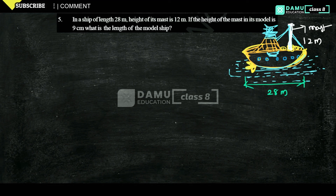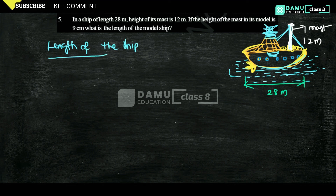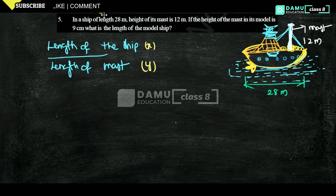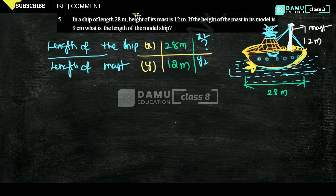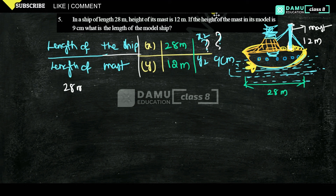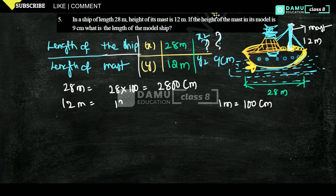We need to find the length of the model ship. Let's take the length of the ship as x and the length of the mast as y. For the real ship, x1 = 28 meters and the mast y1 = 12 meters. We need to find x2, the model ship length, given that the model mast y2 = 9 cm. Converting: 28 meters = 2800 cm and 12 meters = 1200 cm.